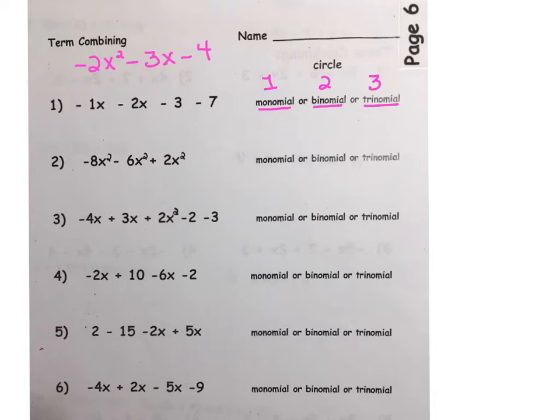Remember we're going to use a circle for the constants, a box for a simple x term, and when we have a term that has x to the second power we have to find another way to highlight that particular term. In this case we're going to use the cloud. So let's jump in.